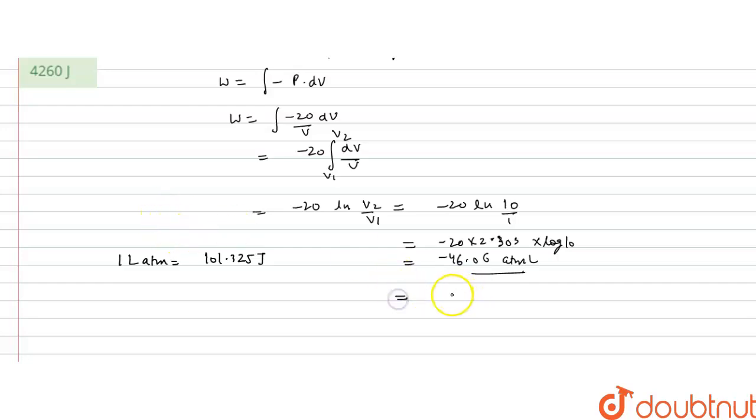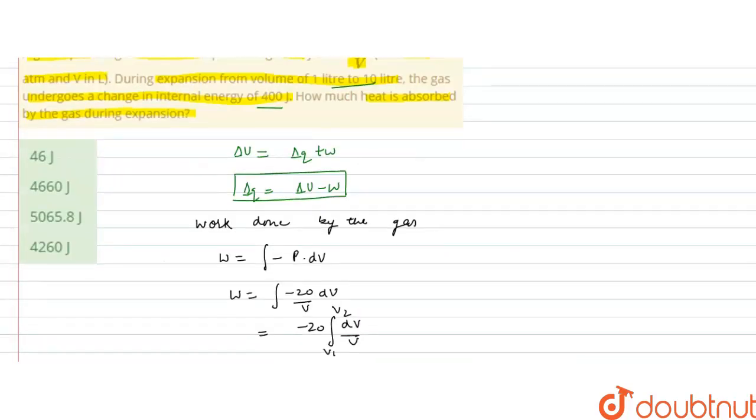It will be equal to minus 46.06 into 101.325, this gives us minus 4667.02 joules. So, this is the work done, now we have to calculate the heat energy that is absorbed by the system.